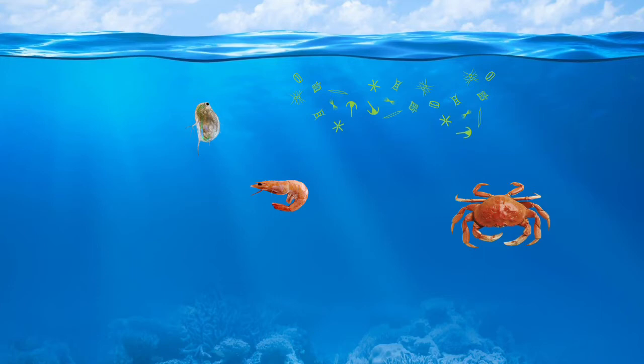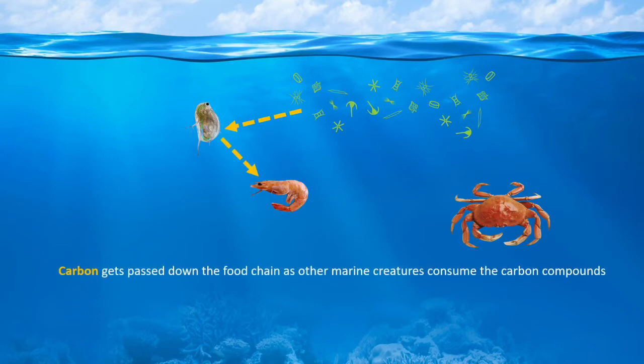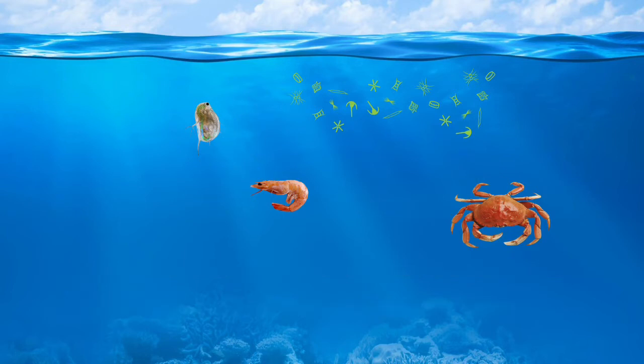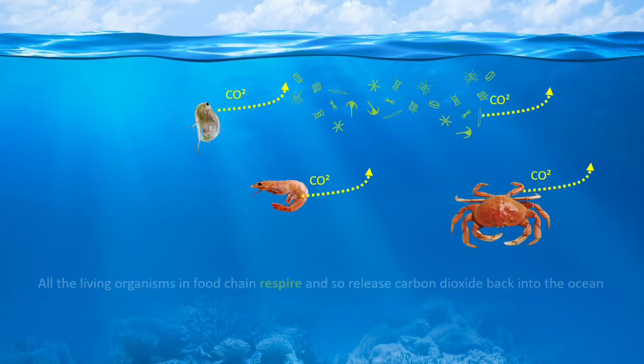These phytoplankton are part of a food chain, and the carbon stored in their shells and structures is absorbed by other parts of the food chain. The carbon in these compounds is passed down the food chain as marine creatures consume them — phytoplankton carbon is absorbed by zooplankton, then by krill, and then by crabs. These living creatures will respire, and therefore release some of the carbon dioxide back into the ocean.